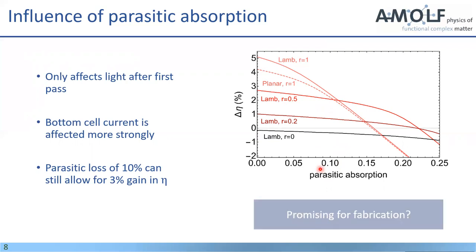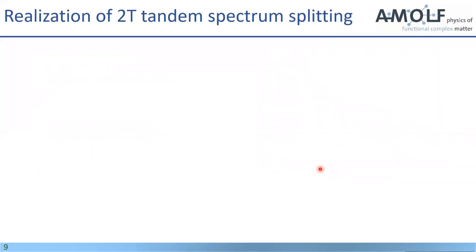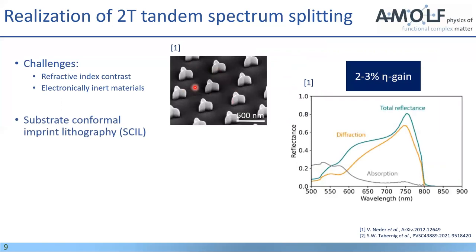Now knowing this, does this mean that this is promising for fabrication? I would say the parasitic absorption argument definitely, but there's still some other hurdles to tackle. First of all, the refractive index contrast, you need to achieve a refractive index contrast to get this spectrum-splitting behavior. There's a couple of ways how you can do this. Either you reshape whatever you have at the interface already, or you introduce electronically inert materials which do the job for you.